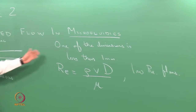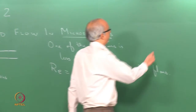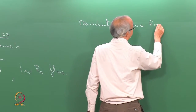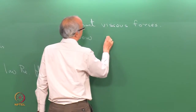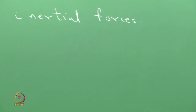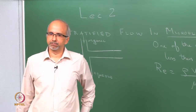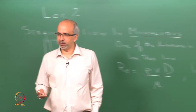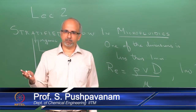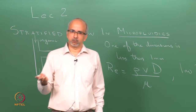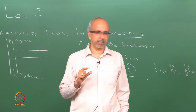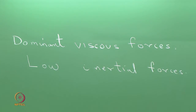Low Reynolds number means inertial forces are negligible and viscous forces are dominant. Since we are looking at low Reynolds numbers, we are in the laminar regime. Laminar regime flows are very well defined, which helps us obtain an analytical solution — whereas a large Reynolds number might push us toward the turbulent regime requiring a numerical solution. Our objective is to exploit the fact that the Reynolds number is low.